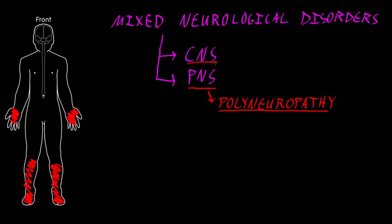When these disorders affect the central nervous system, what we most often see is a diffuse syndrome involving the cerebral cortex. So we often see bilateral involvement of this outer layer of the brain, the cerebral cortex, although there are a few of these disorders that can cause focal abnormalities as well.